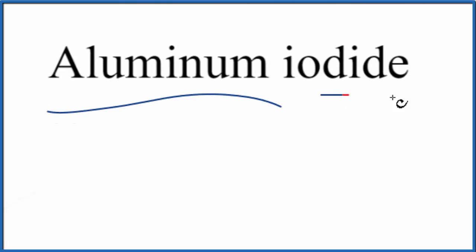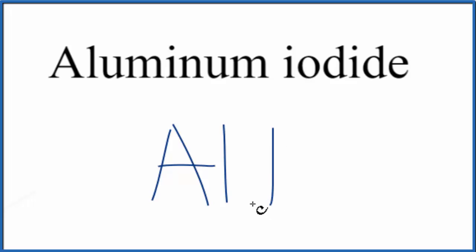To write the formula for aluminum iodide, the first thing we need to do is write the element symbols. We have aluminum, that's just Al, and then iodide, that's the iodine. So we have AlI.